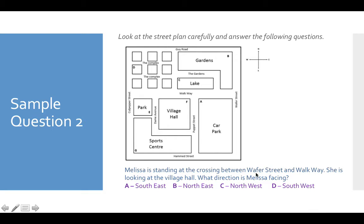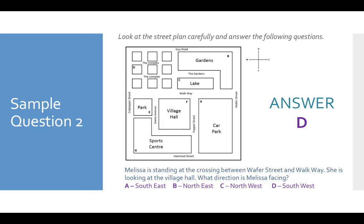Okay, so have you got your answer? Let's take a look. Melissa is standing at the cross in between Wafer Street and Walkway, so here we've got Wafer Street and Walkway — she's standing somewhere here. She is looking at the village hall, so if she's looking this way and she's standing there, you can tell that she would be facing southwest, because the village hall is not at the very bottom of her, and it's not exactly to the left — it's somewhere in between, so it would be southwest. Did you get that answer? If so, great. If not, just see where you went wrong and try the question again. Look at it from a different perspective and use the compass to help you out.